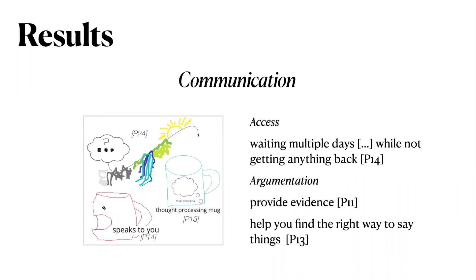Concerns around access were typically seen in contrast to the current system, where users are stuck 'waiting multiple days while not getting anything back.' Participants also suggested ways to support users' argumentation by allowing or even helping them to provide evidence or find the right way to say things. In many cases, participants saw this as scaffolding users' communication skills, helping them understand what the platform would consider and listen to, while providing the information needed to argue for changes successfully.